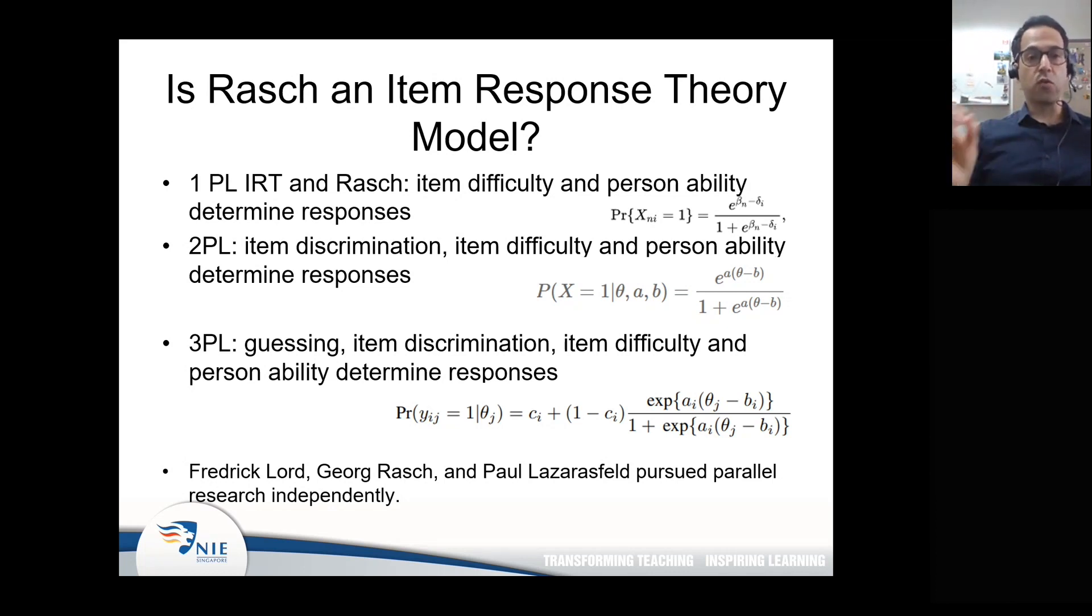And the third IRT model is a three PL model in which guessing is added to the equation. As you see in the equation right at the bottom here, we can see both the two PL model plus one parameter before the two PL. So you multiply the two PL by the guessing parameter, and guessing is represented as the intercept in the logistic function. The Rasch measurement basically fixes the two parameters of item discrimination and guessing, whereas in IRT, you don't fix them, at least in the two PL and three PL.